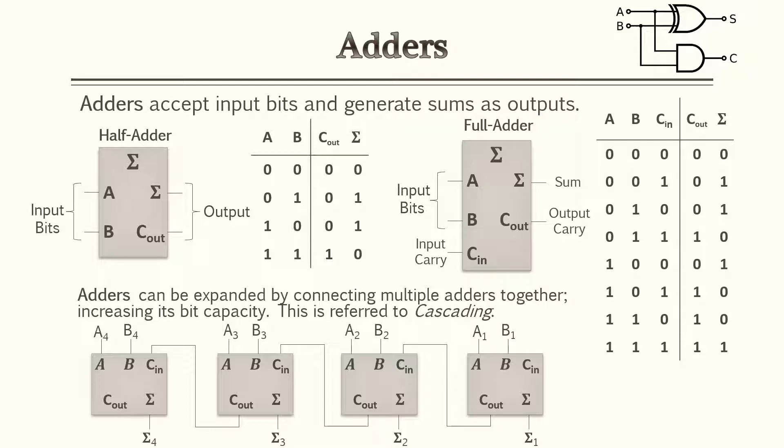The good news about full adders, you can expand them and connect several of them together to actually increase your bit capacity. This is known as cascading. And we're going to go over our example problem with this later on.